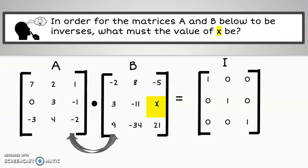What about 3 by 3 matrices? In order for the matrices A and B below to be inverses, what must the value of x be?